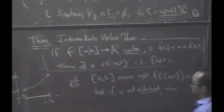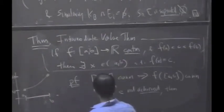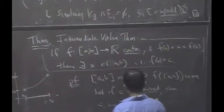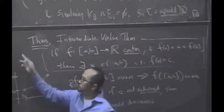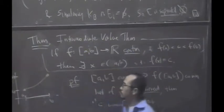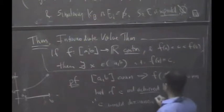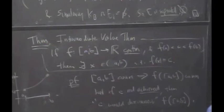then C would disconnect F(AB). I'm saying this very informally. Formally, I would say, take the interval from C to infinity and intersect it with F(AB) and take the part below and intersect it with F(AB) and that forms a disconnection. C would disconnect F(AB). That's the basic idea.